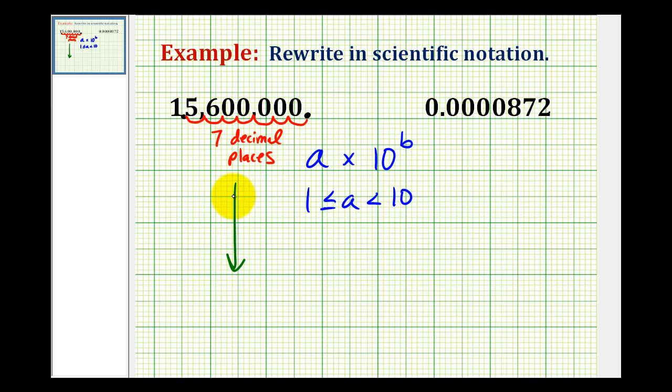Therefore, written in scientific notation, we would have 1.56 times 10 to the power of 7. We move the decimal place 7 places to the left, so our exponent will be positive 7.